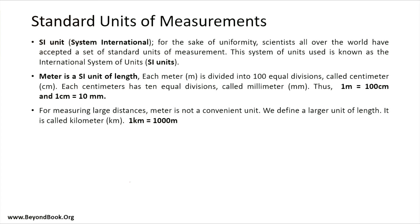Now we have some standard units of measurement called SI units. These are units accepted by famous scientists all over the world. The short form is SI units. Meter is the SI unit of length, and each meter is divided into 100 equal divisions. This straight line divided into 100 small divisions — each division equals one centimeter. So one meter divided into 100 equal divisions gives us centimeters.